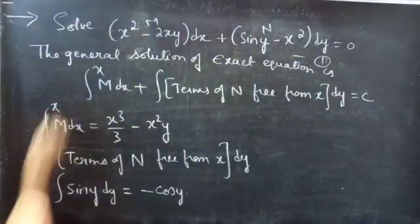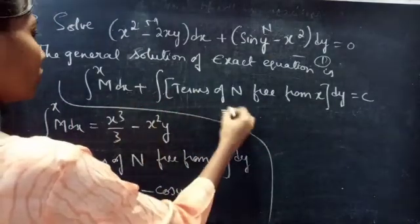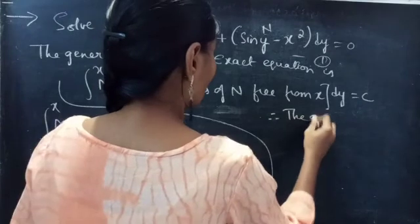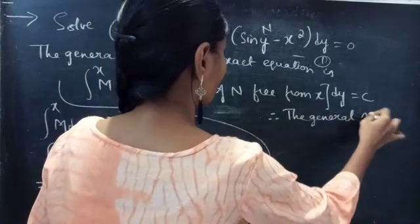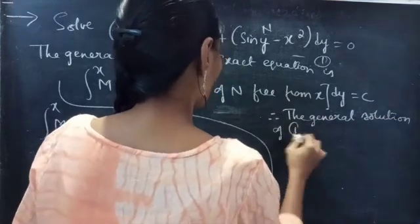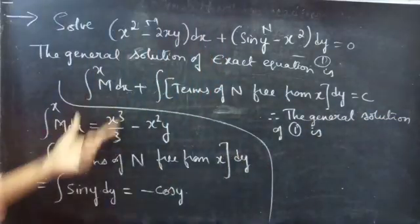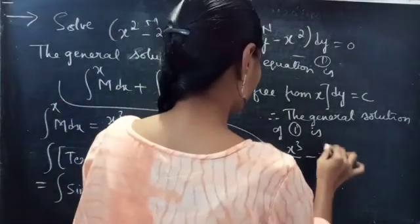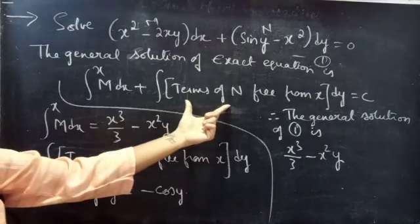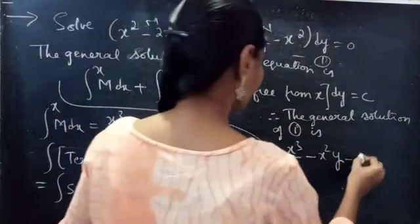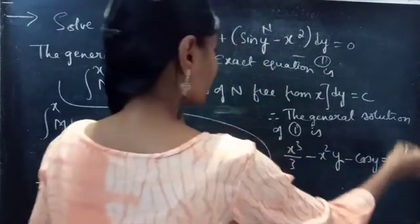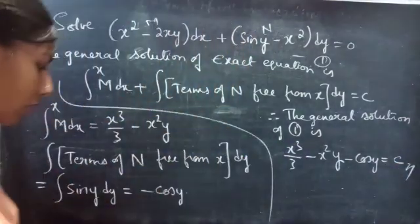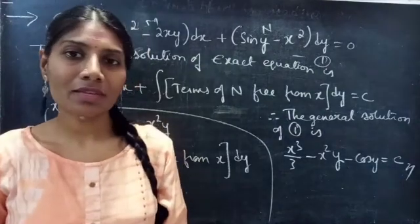Therefore, the general solution of equation 1 is the result from the first integral plus the result from the second integral: x cubed over 3 minus x squared y minus cos y equals constant c, which is the required general solution. So this is all for now. Hope you all understand. We will see you in the next video. Bye-bye.